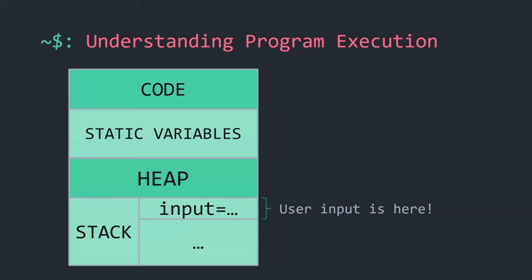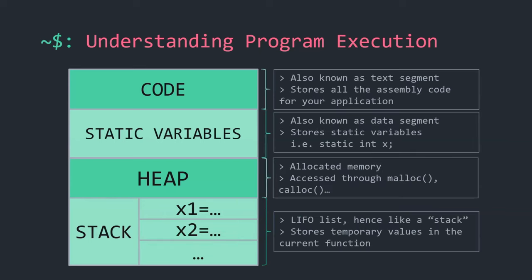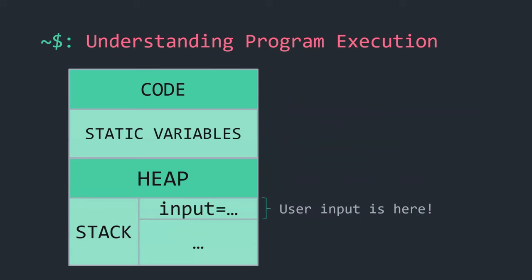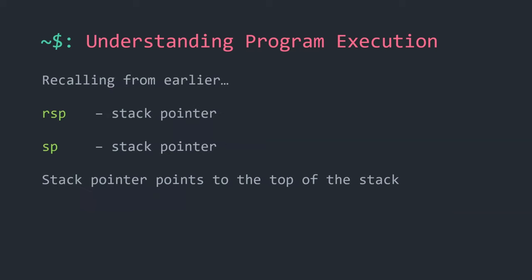So right after the read, on the next instruction, our user input will be on the stack. The stack pointer points to the top of the stack and constantly changes as things are added or removed. When you go into another function, the stack pointer moves again because different functions reserve their own stack space for temporary variables. We know the user input is at the top of the stack, and we know the CPU keeps a stack pointer register that points there.